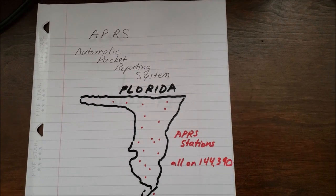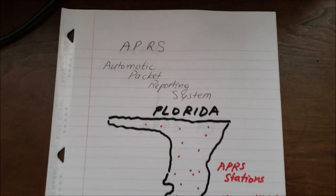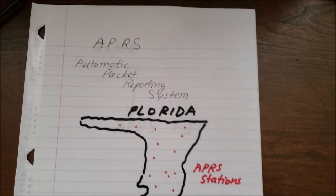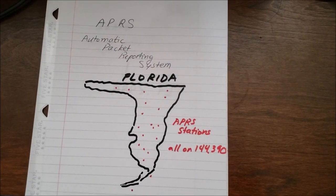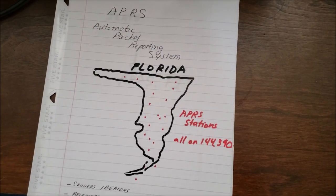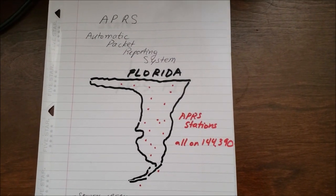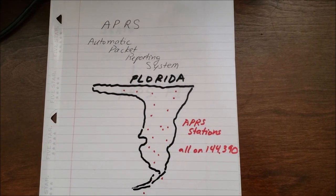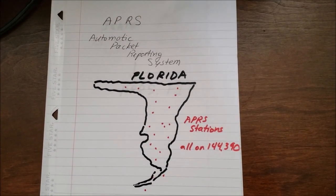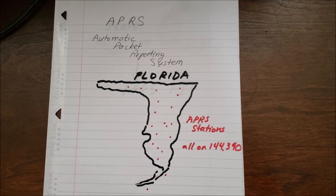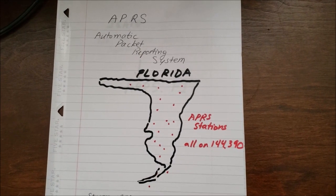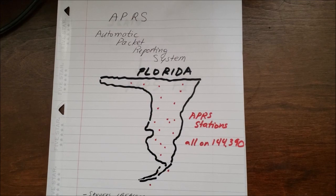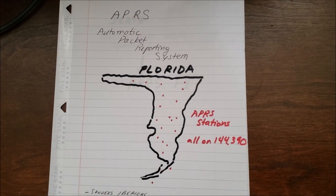So basically, APRS stands for Automatic Packet Reporting System. Let's say this is the state of Florida — it could be any state — and there are lots of receivers, transmitters, and beacons around the entire state that are all tuned to the same frequency: 144.390, and they always listen for APRS.